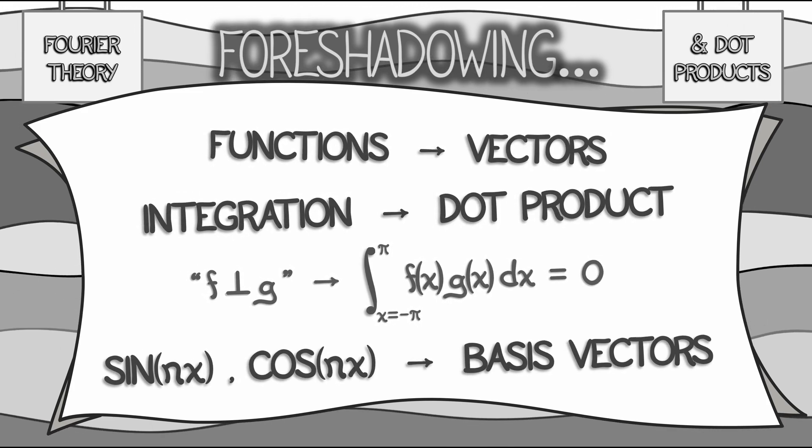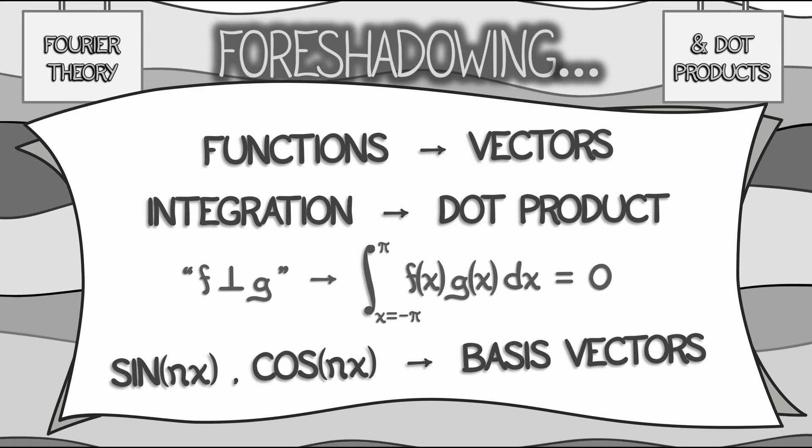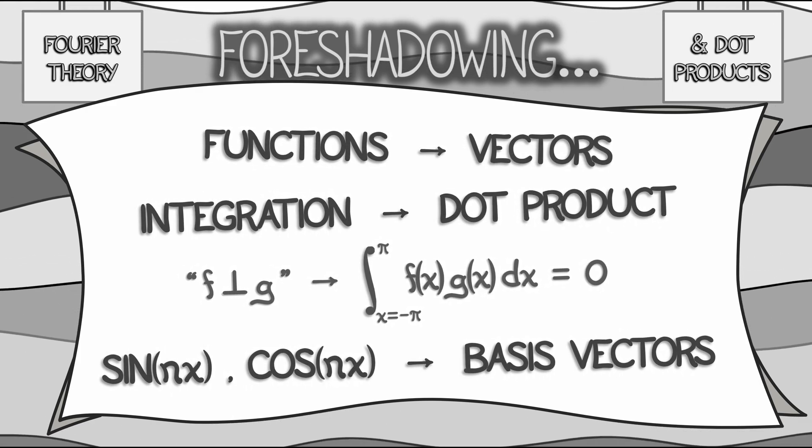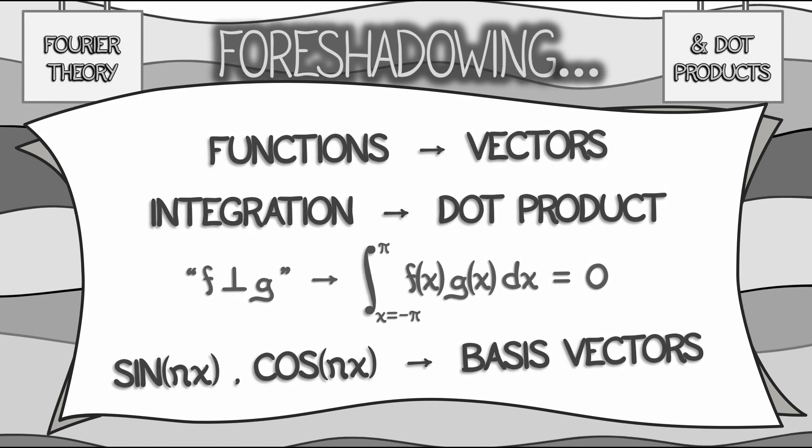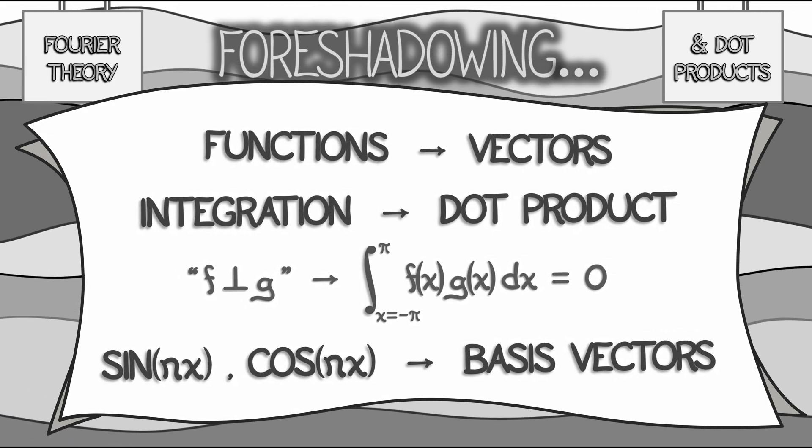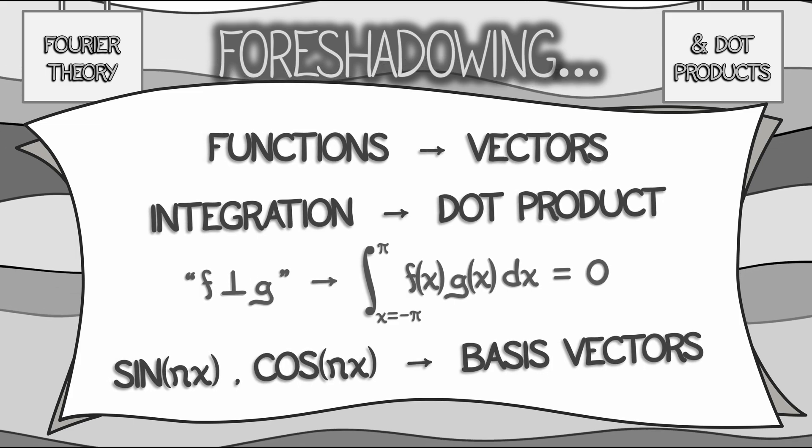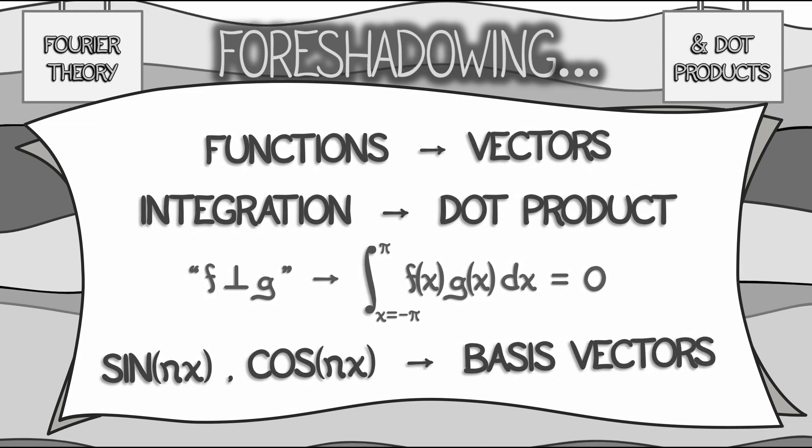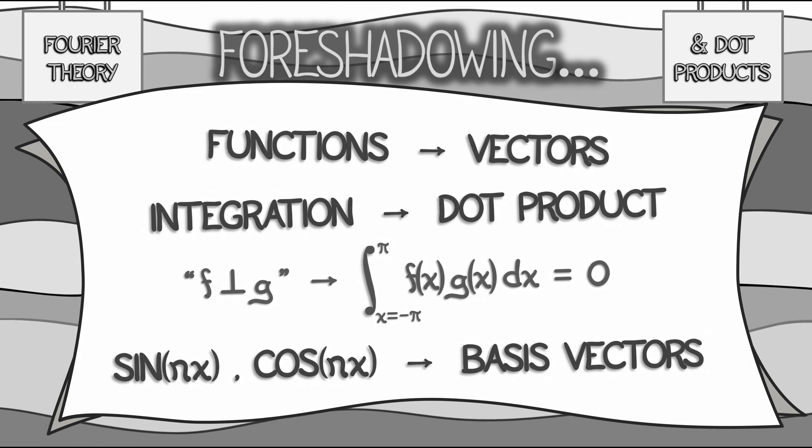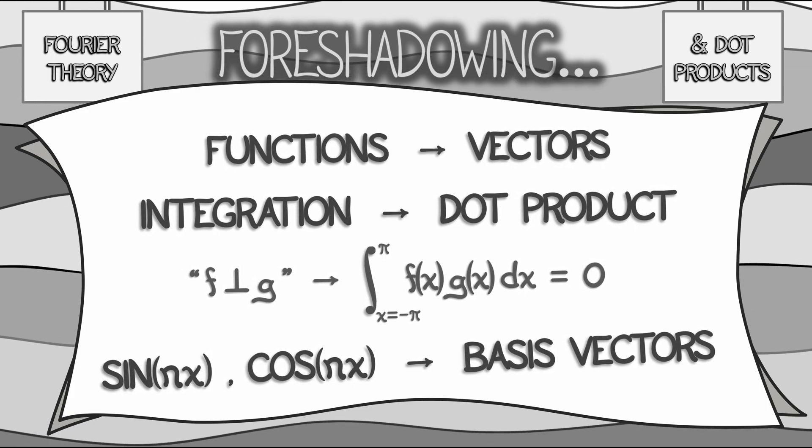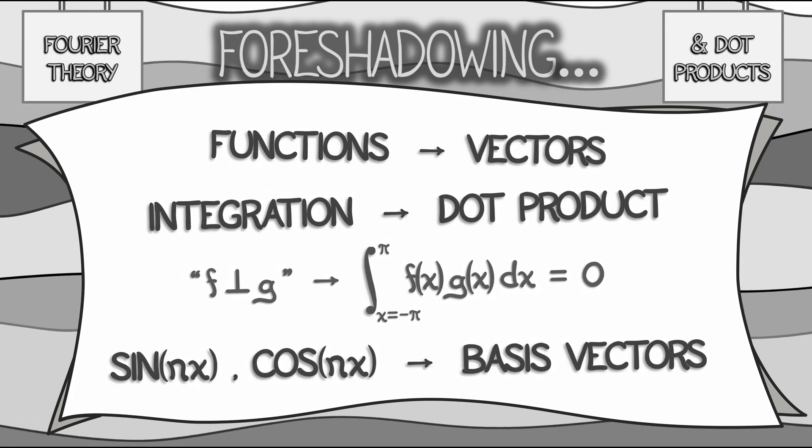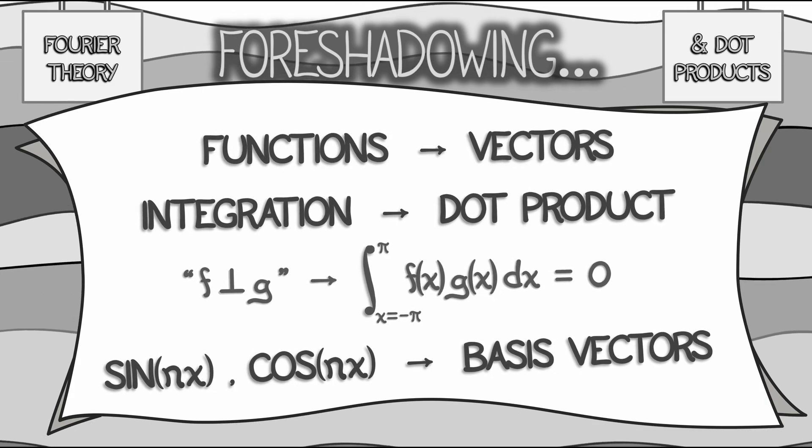This is something just like a dot product. And the basis vectors that are used in this function space are not like the standard basis vectors we've learned of, but rather sines and cosines, waves of different frequencies. These basis vectors, this dot product, will be so useful when you learn this theory.